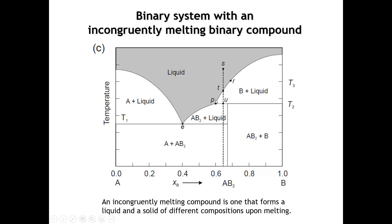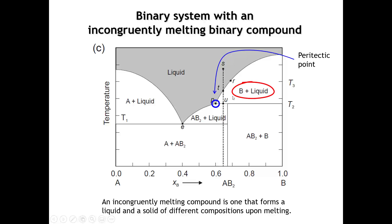In this kind of phase diagram, we encounter a new point called a peritectic point, which would be point P. Just like a eutectic point, we have two solid phases and a liquid in equilibrium. But at this peritectic point we have an equilibrium between solid AB2 and solid B, with the liquid. Notice that the composition of the peritectic point — here about 60% B — is richer in A than either of the two solids that are at equilibrium at this point. When we have a peritectic point, it will be a kink in our liquidus rather than a minimum in the liquidus.